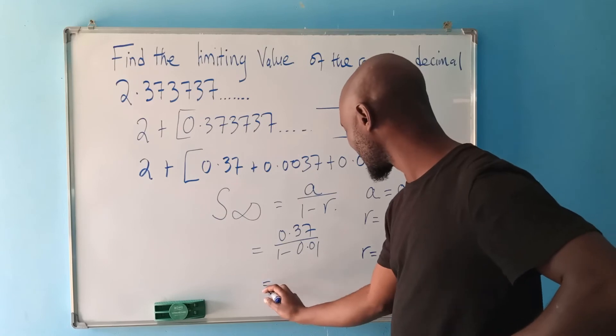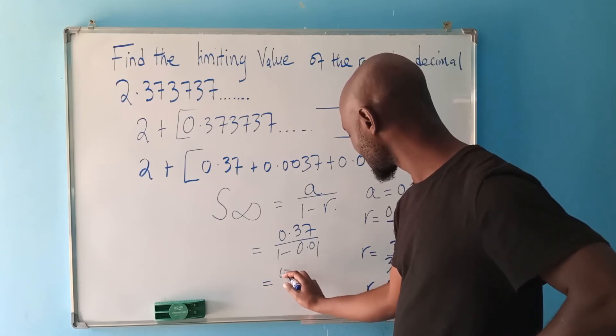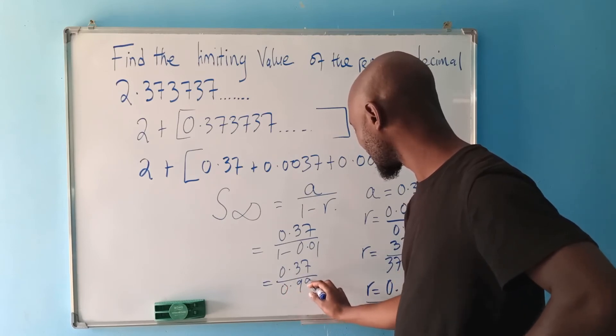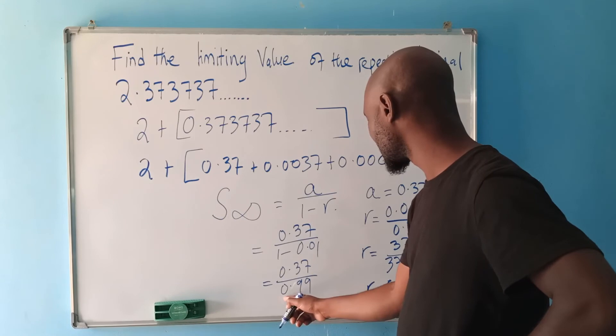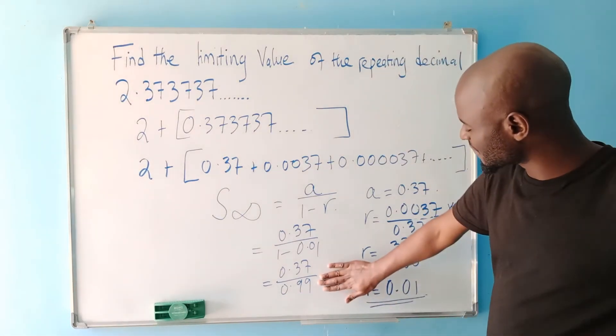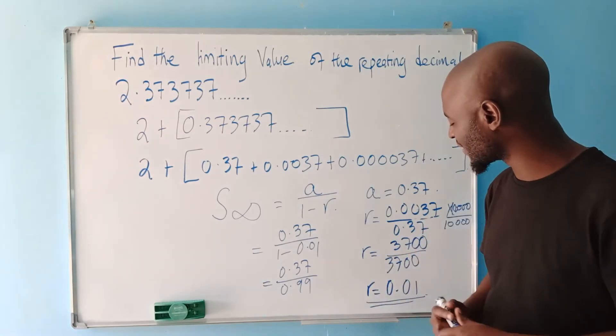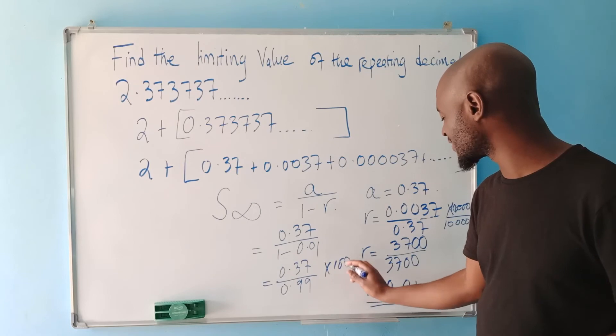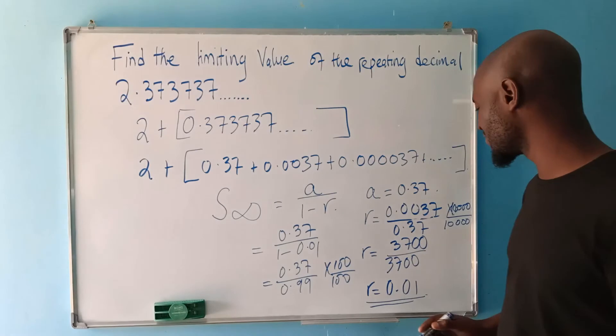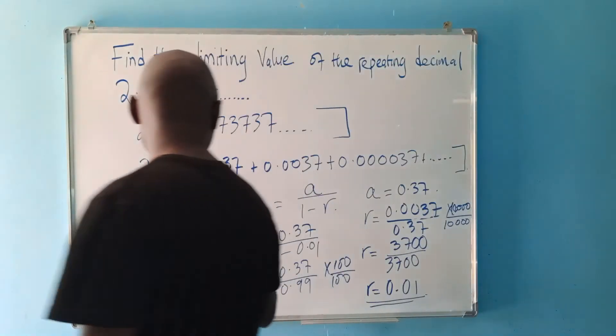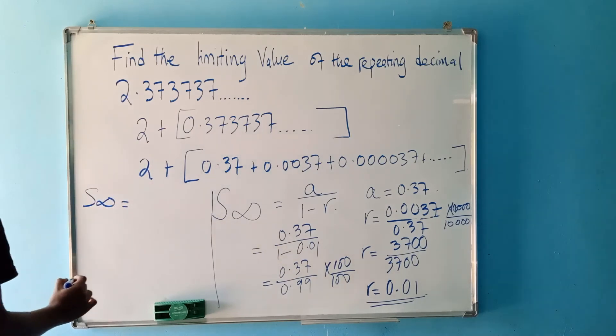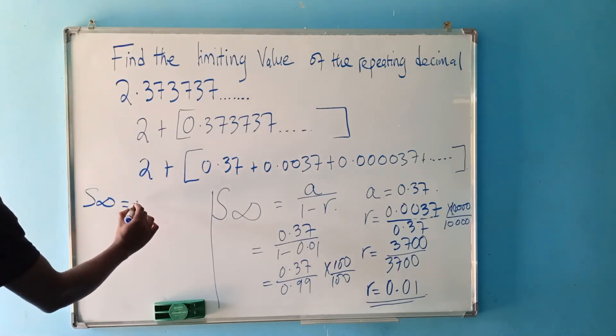So when we do this, we are going to have 0.37 over 0.99. When you subtract this, you get 0.99. Now, now that we have the limiting value, we can again simplify this. We can multiply on top by 100 and down by 100 so that we remove the decimal point there. What we have is sum to infinity is equal to 37 over 99.